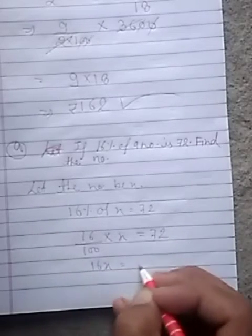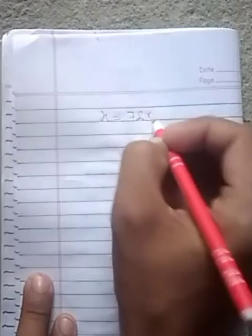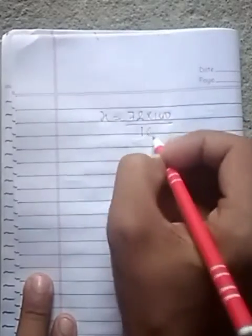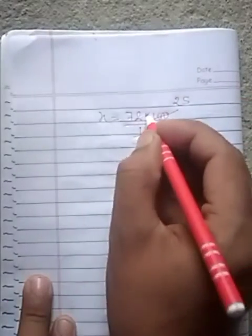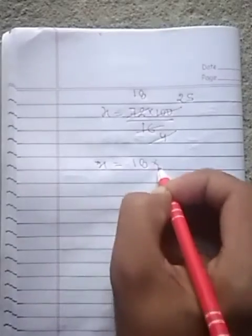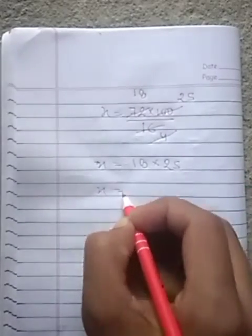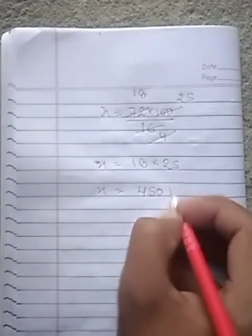By using cross multiplication, 16x is equal to 72 into 100. x is equal to 72 into 100 upon 16. 4 divides 16, 4 divides 100, we get 25. 4 divides 72, we get 18. So x is equal to 18 multiplied by 25. We get 450.